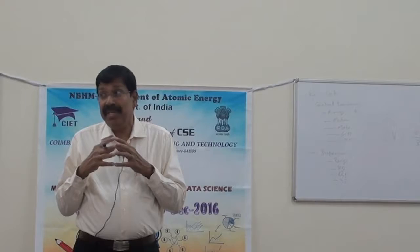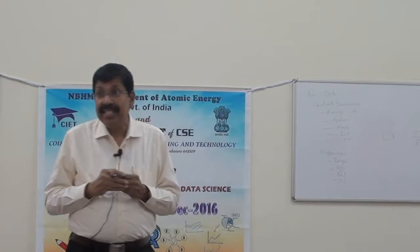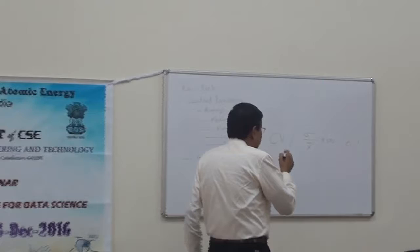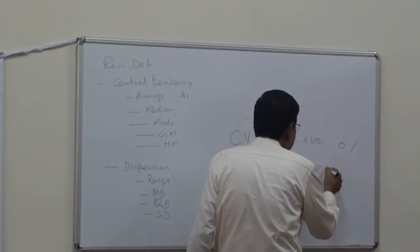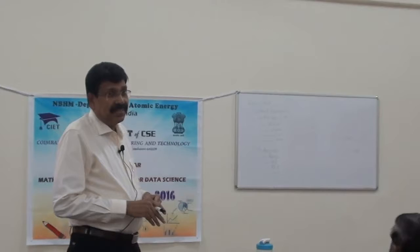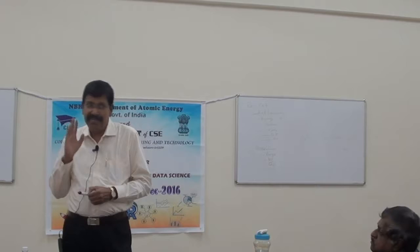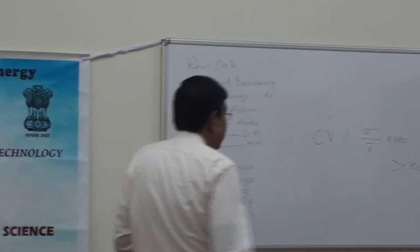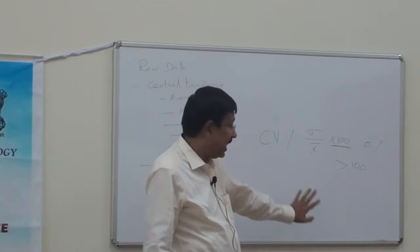You may ask: doesn't standard deviation do the same thing? It is not enough — it should be expressed relative to the mean value. So CV is sigma divided by x-bar, expressed as a percentage. If the CV is more than 100, that means your sigma will be more than the mean value, indicating a huge deviation. More the coefficient of variation, more will be the deviations.